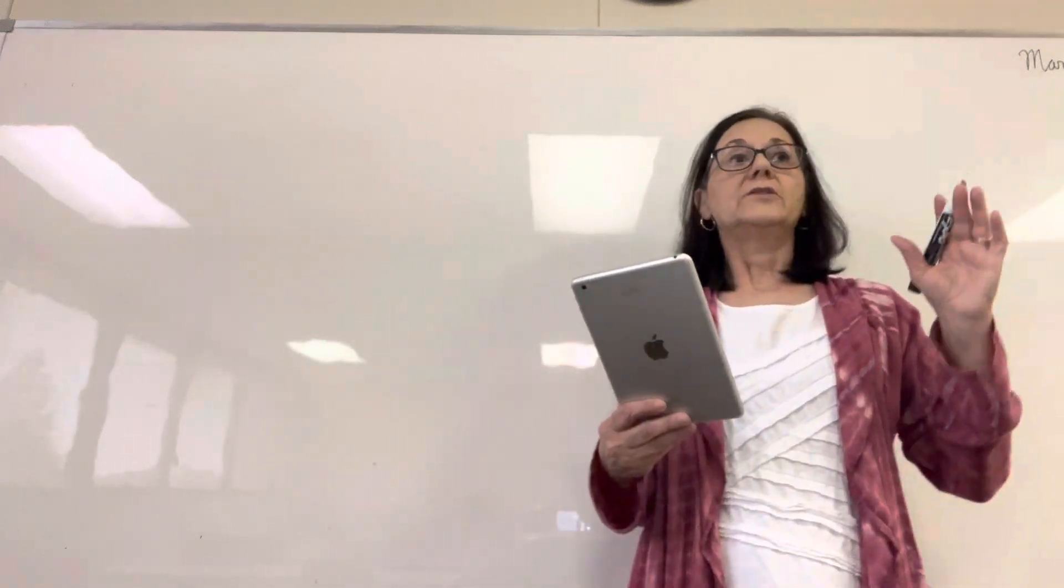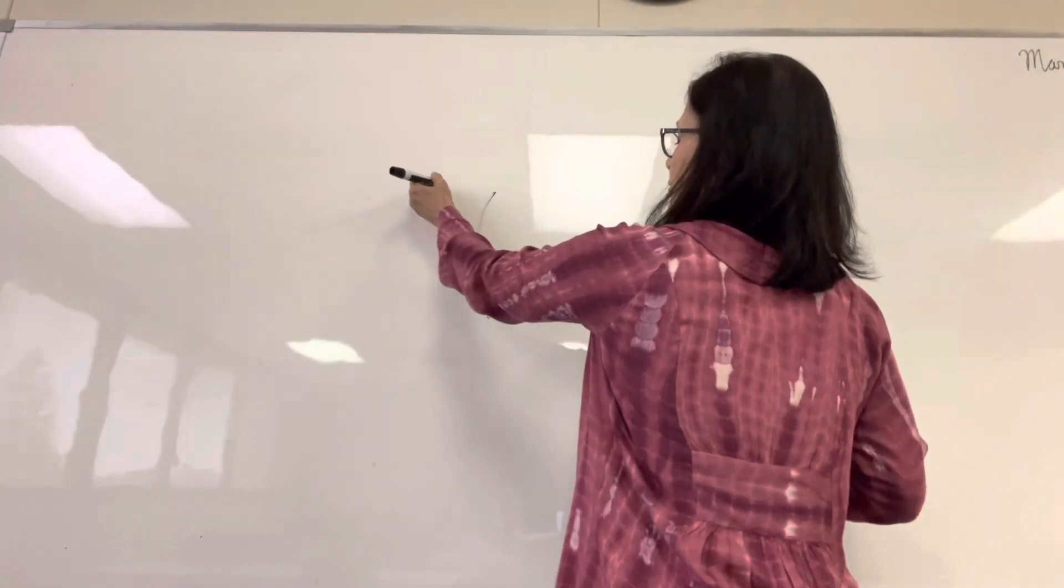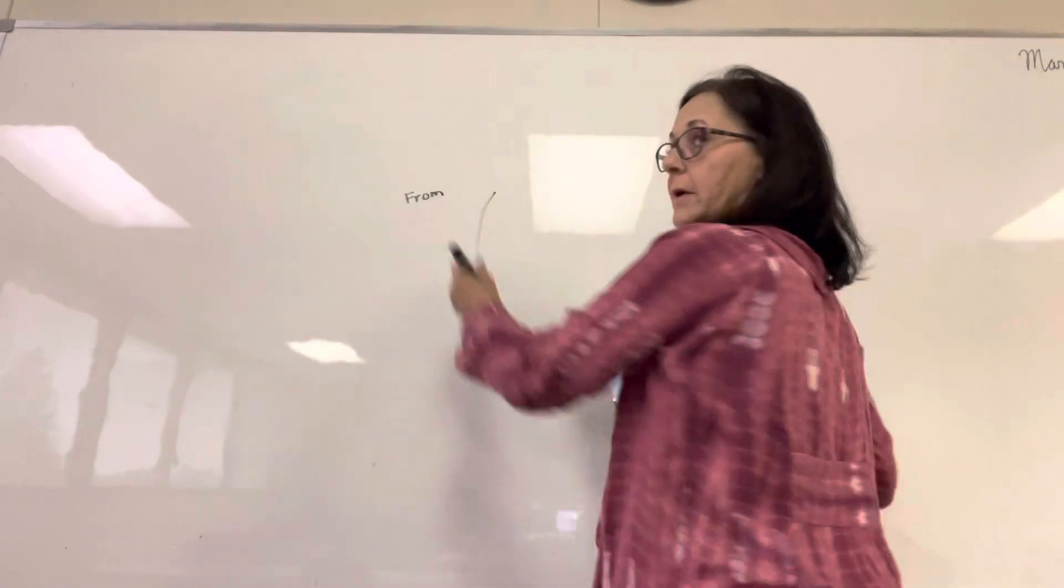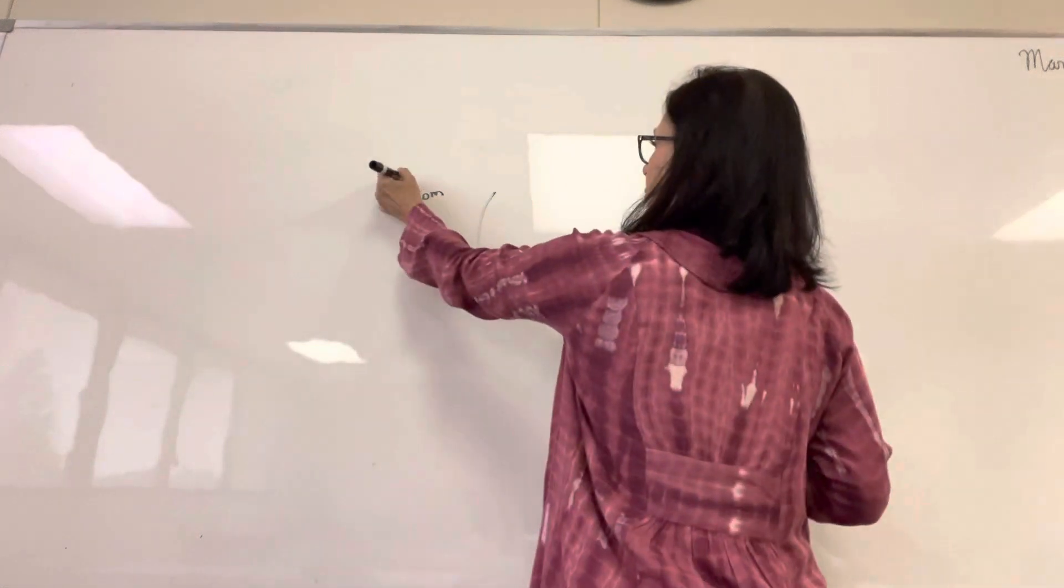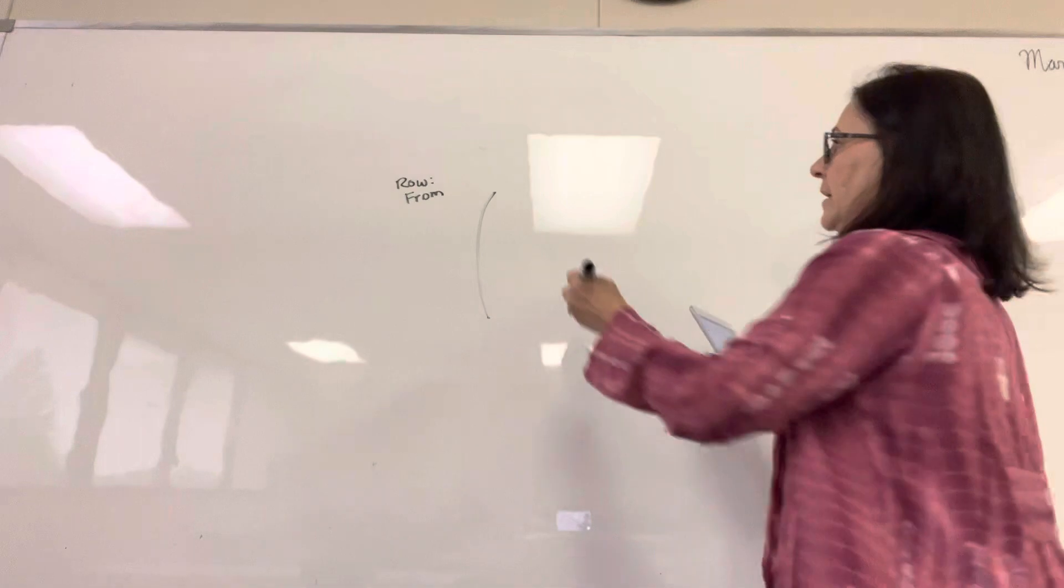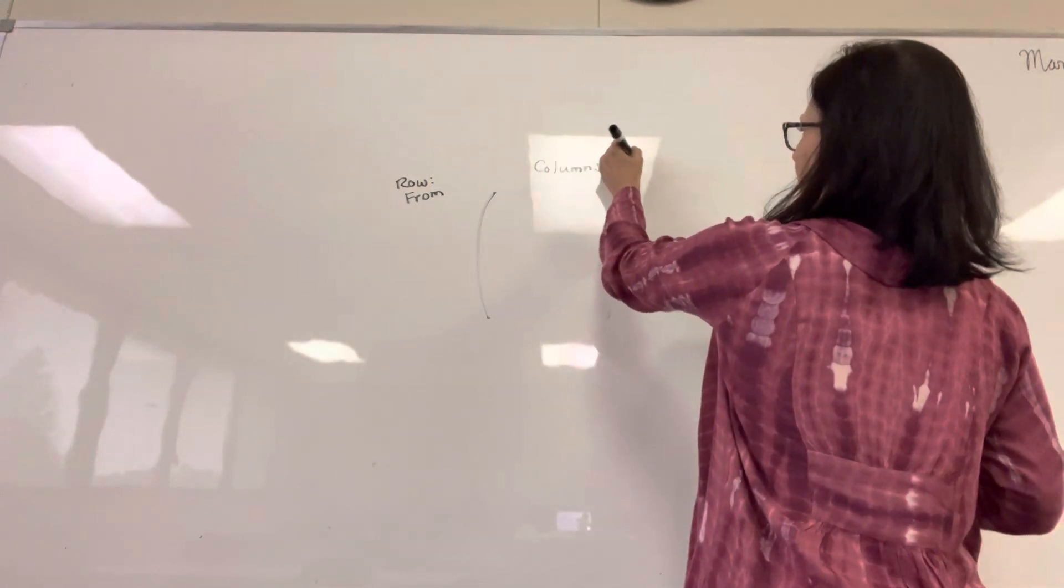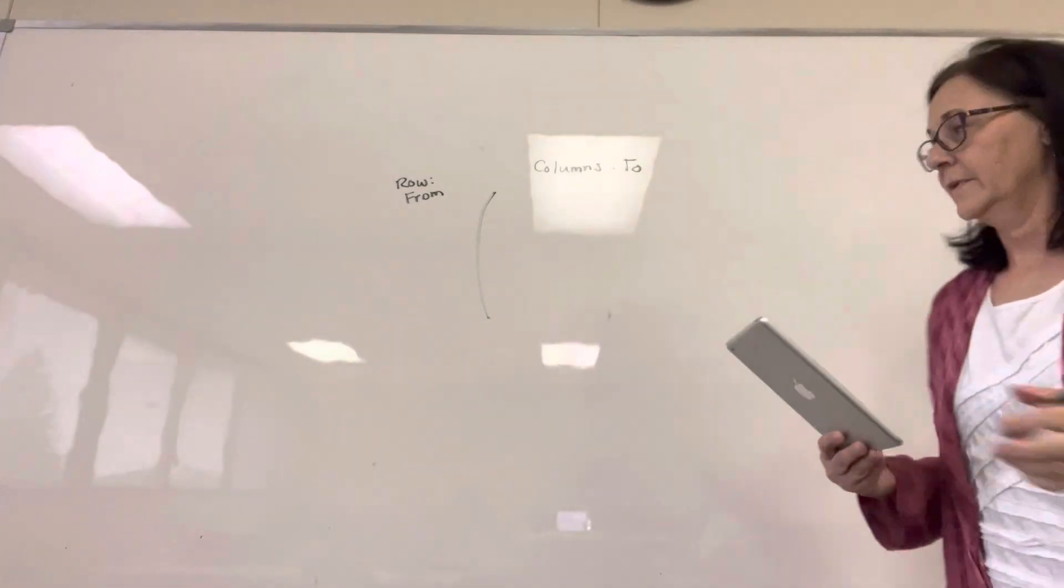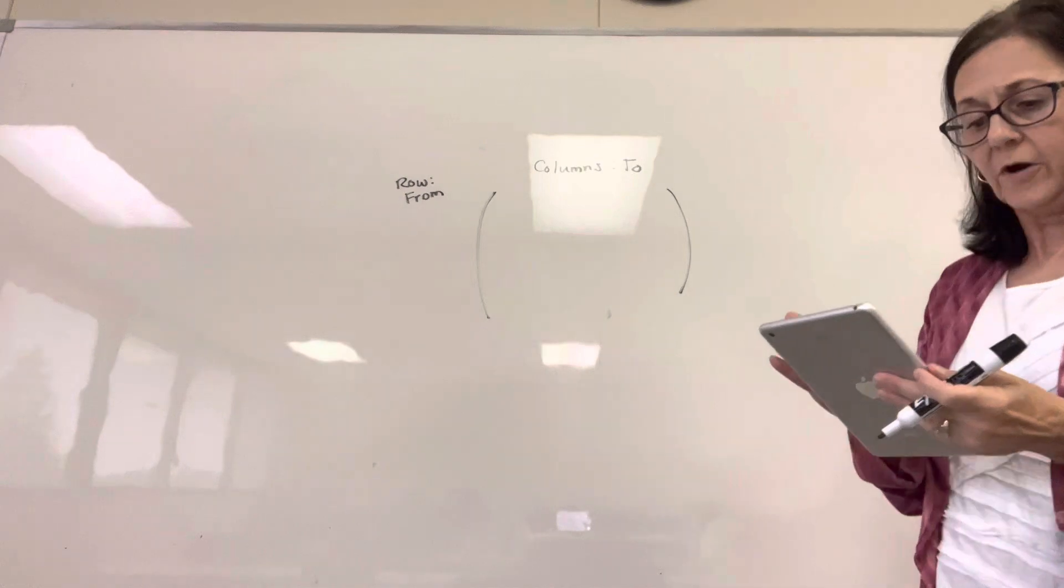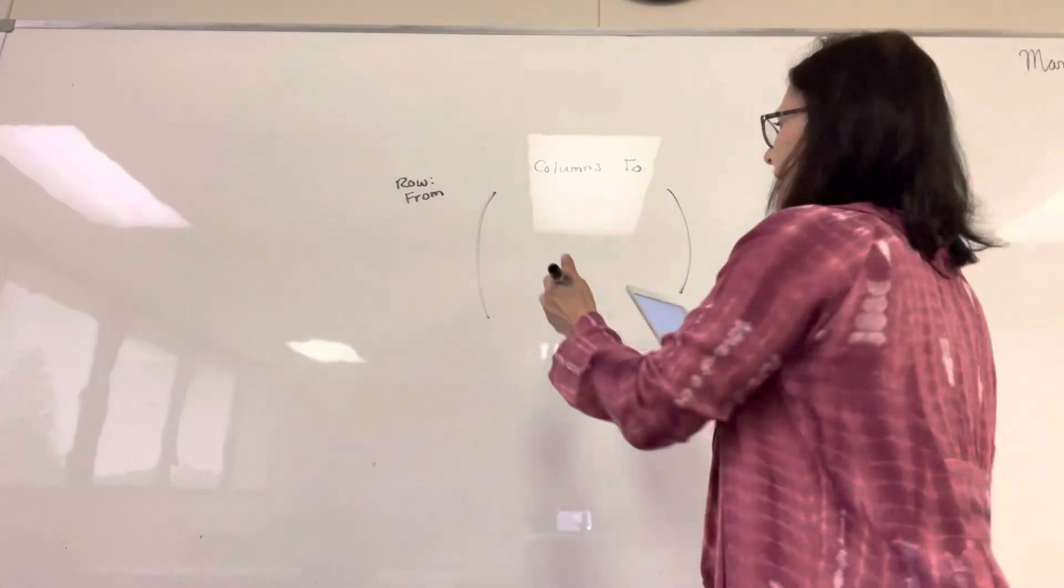So a directed network can be written as a matrix. On my rows, I write where I'm coming from. The rows are where I'm coming from. The columns are where I'm going to. You see the little arrows? So in the directed network in the figure on that page, we have K, L, and M.